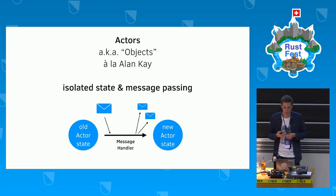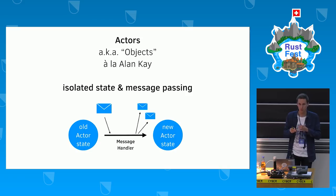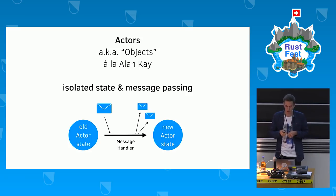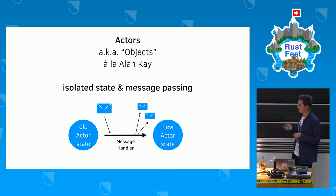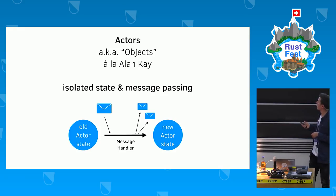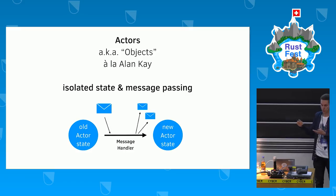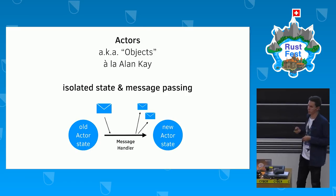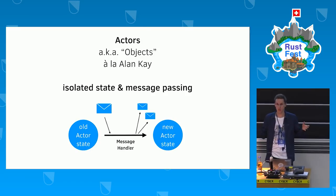An actor — also known as an object in the original sense as Alan Kay defined it when he invented object-oriented programming — is just an object with isolated state that only it itself can mutate. The only way it can influence other actors is through message passing. To represent this: one actor has some state, receives a message from another actor, handles it via a message handler, mutates its state to produce a new state, and can send arbitrary messages to other actors. Out of this you build everything in an actor-system-based architecture.